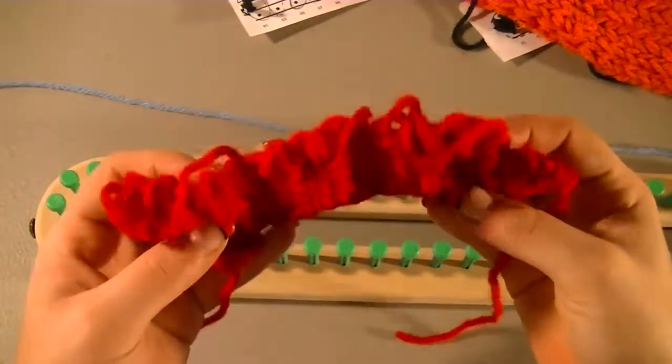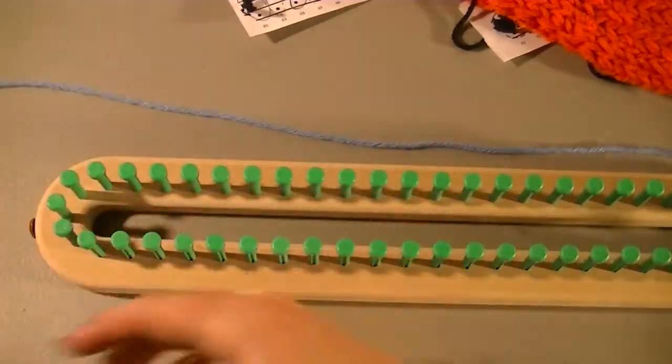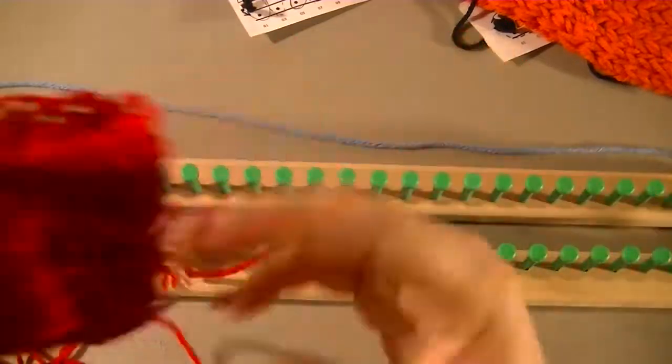your cast on edge will look like this and then it'll just be kind of weird, but a simple trick you can do to help you finish that off when you're done.